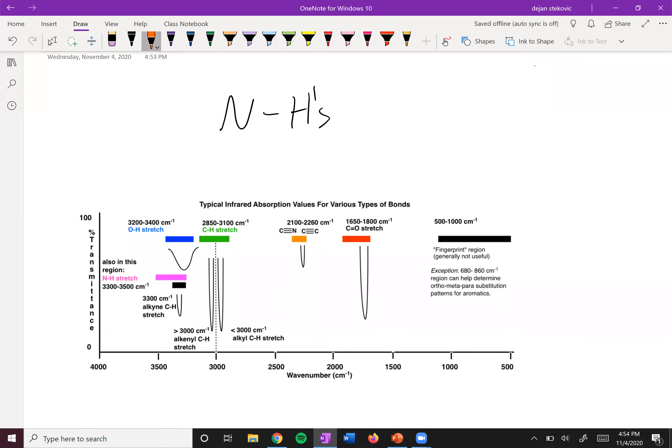All right, next up, we'll move on to NH bonds. These occur over here in this 3,300 to 3,500 region.